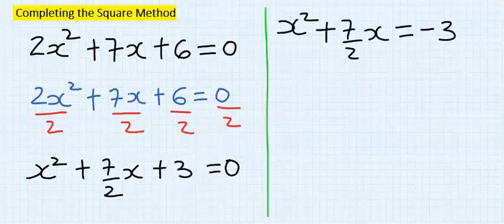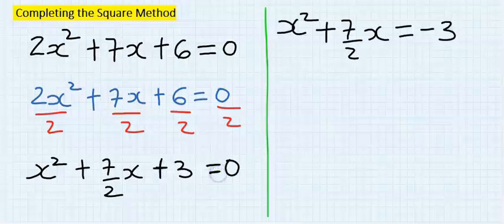Step number two: take the constant across the equal sign. You can see the plus three moves to the other side and it becomes minus three.